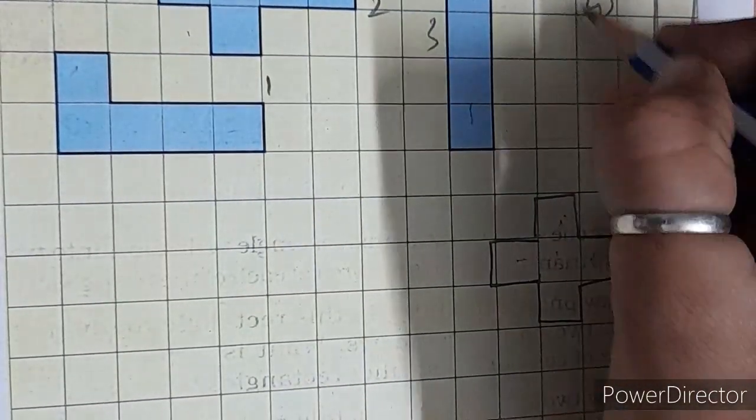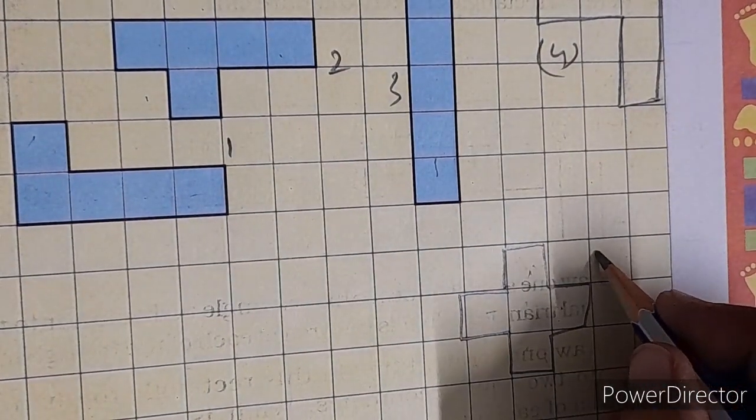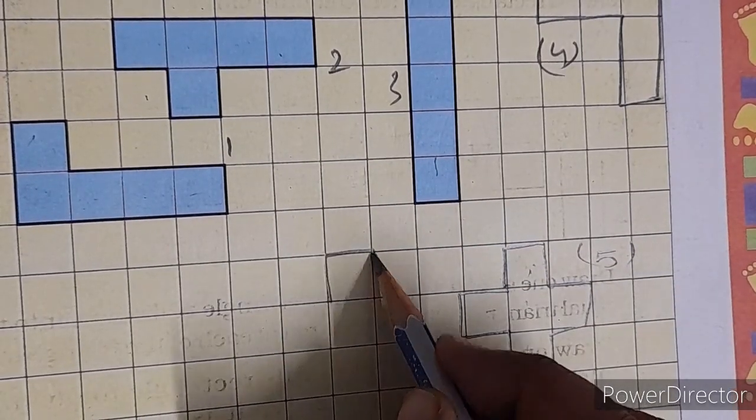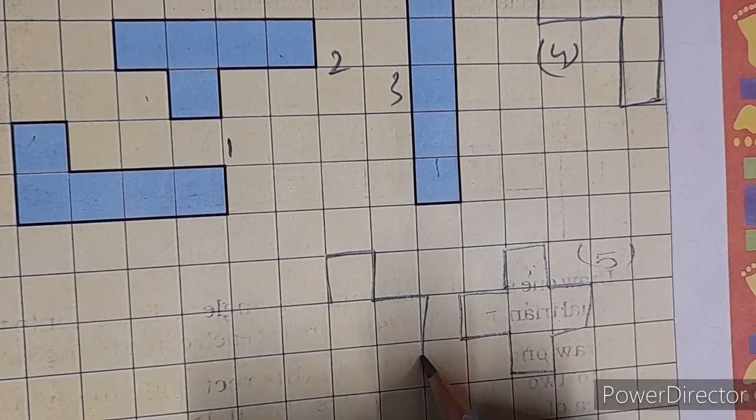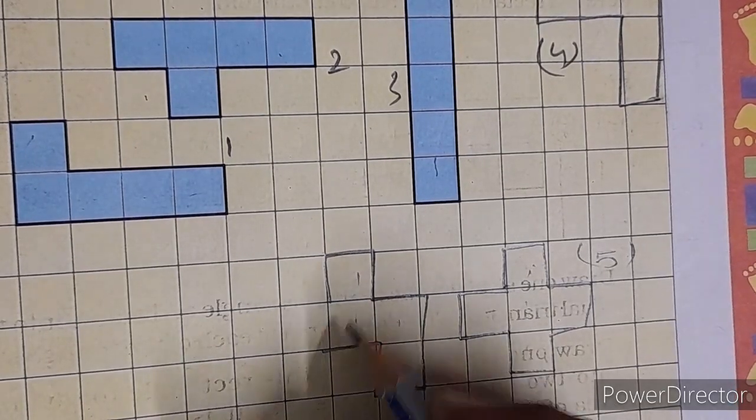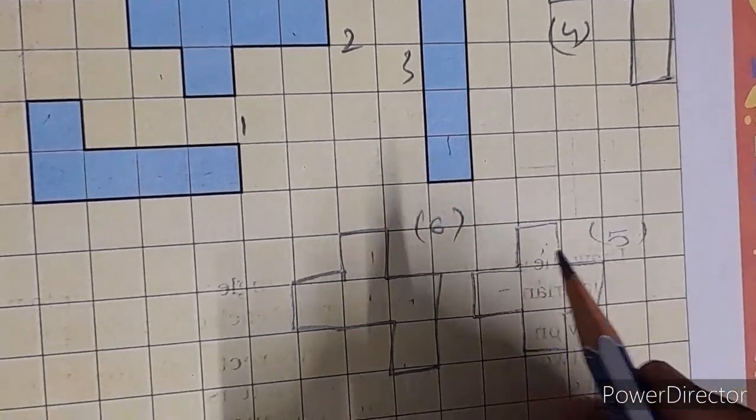1, 2, 3, 4, 5. Next, we will draw 1, 2, 3, 4, and this is 5. This is our 6 number.